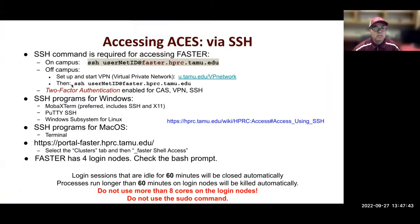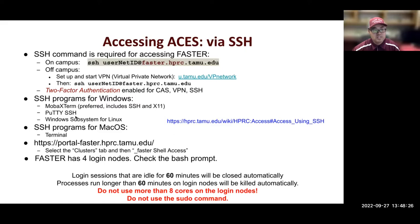If you are affiliated with Texas A&M and have a NetID but are off campus, you need to set up and start VPN — a Virtual Private Network — then use the SSH command. You'll need to go through two-factor authentication for the Central Authentication Service, VPN, and SSH. On Windows, the recommended SSH program is MobaXterm; you can also use PuTTY or Windows Subsystem for Linux. On Mac OS, use the terminal application.